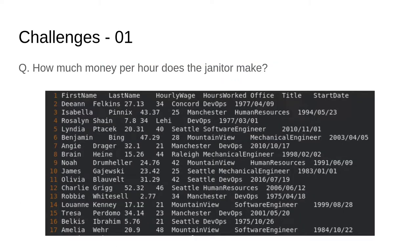The first question: how much money per hour does the janitor make? So this screenshot here you're seeing, this is what the data looks like — just the first 17 lines. There are hundreds, I think thousands of lines in there. But you kind of need to know the structure of the data before you can start writing a script.